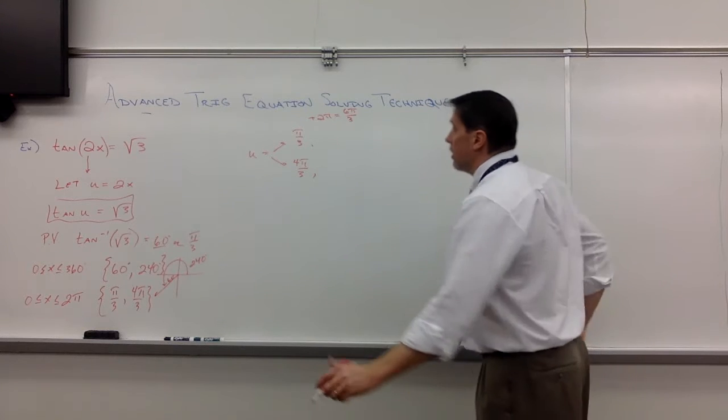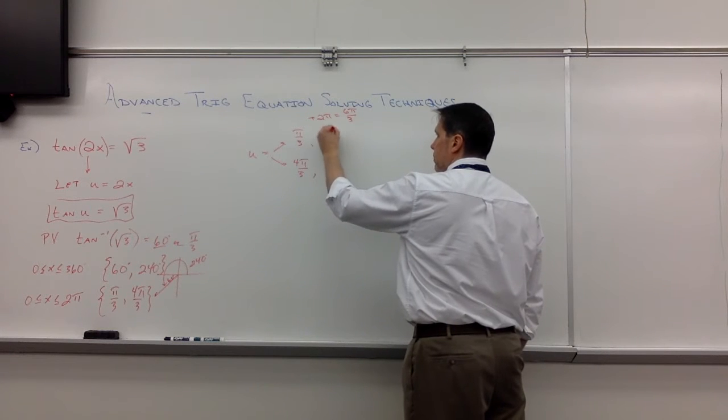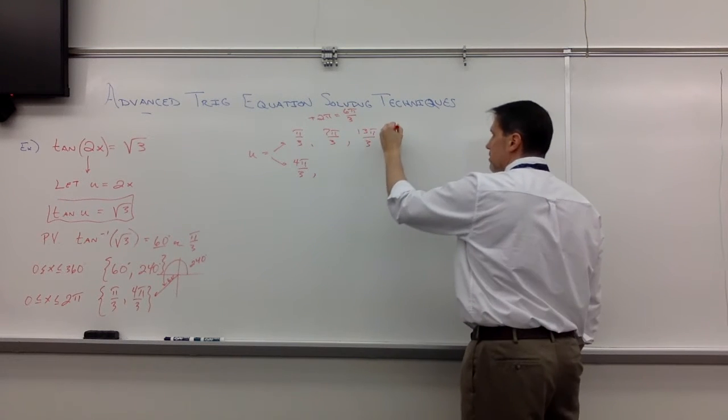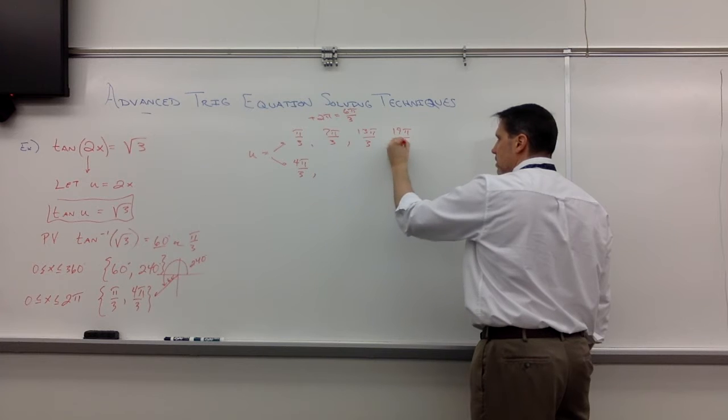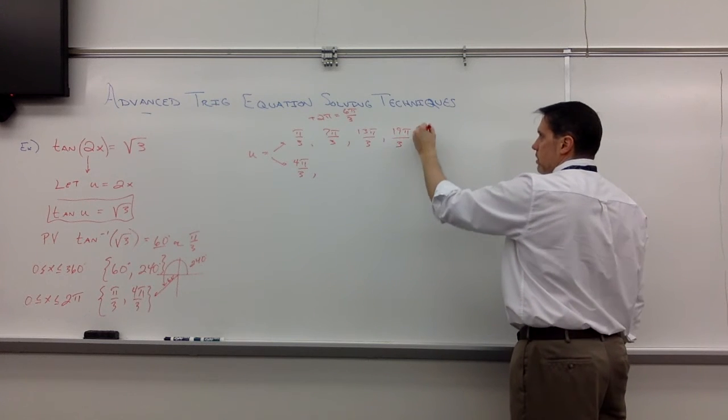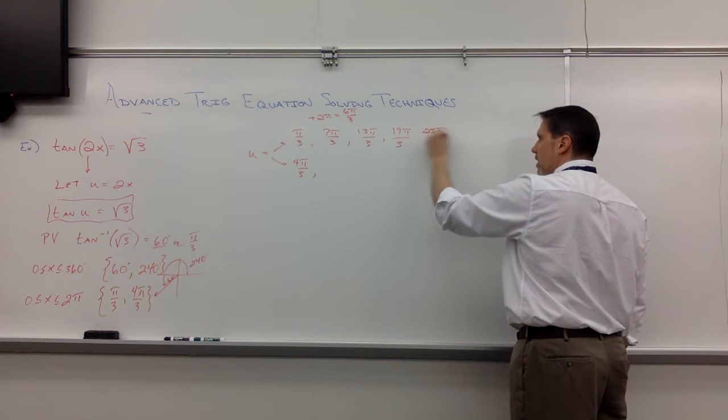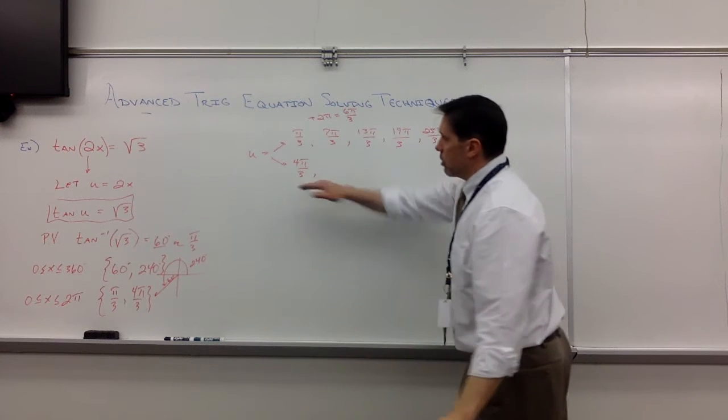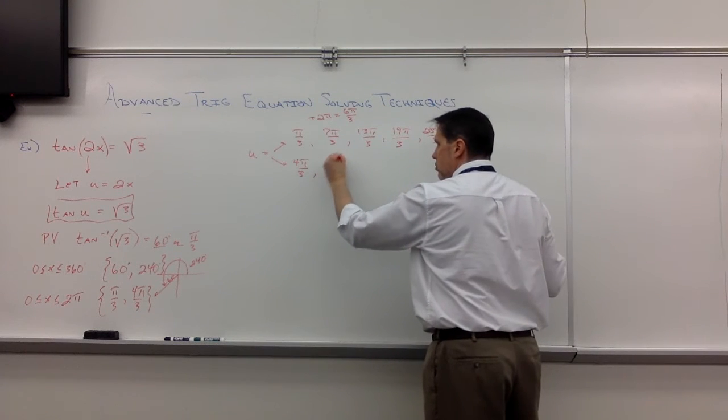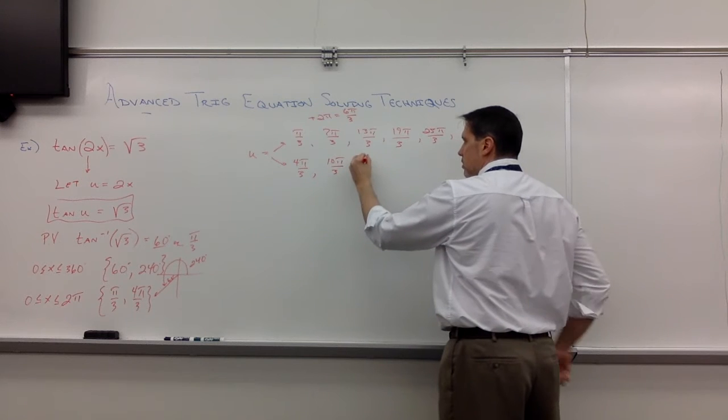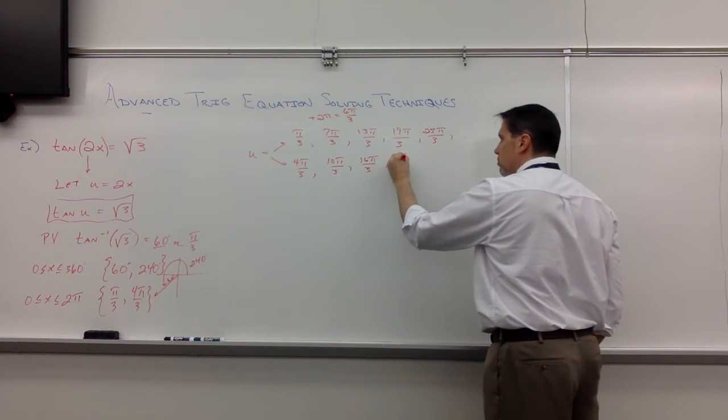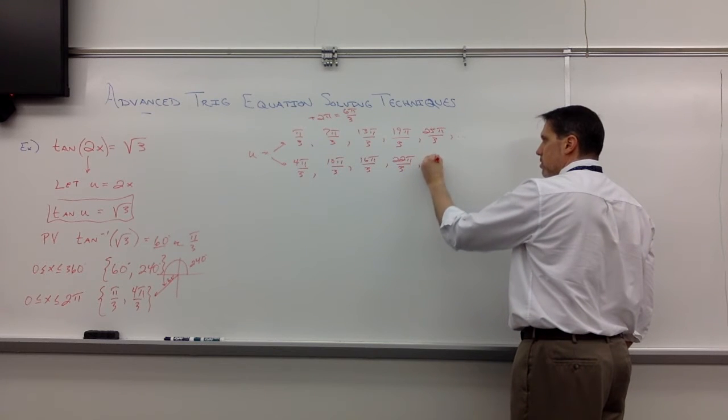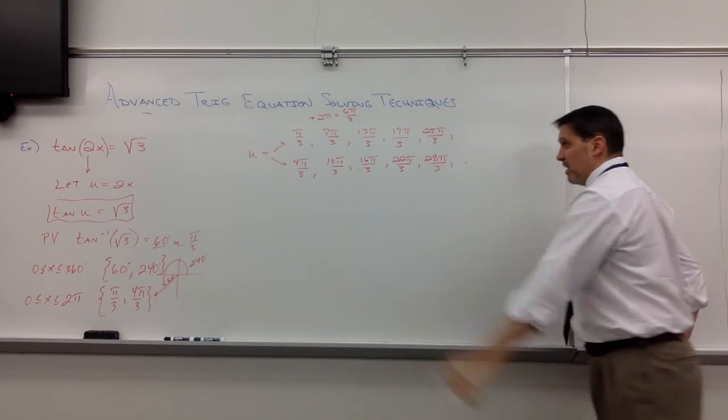To make it easy, let me add correctly this time. π thirds plus 6π thirds. 7π thirds. Plus 6π thirds is 13π thirds. Plus 6π thirds is 19π thirds. How much further? Add another 6π thirds. That's 25π thirds. I'm going to say et cetera. If we do the coterminal angles for 4π thirds, well, you get your 10π thirds. You get your 16π thirds. Your 22π thirds. Your 28π thirds. Et cetera.